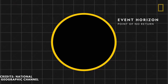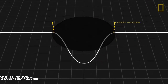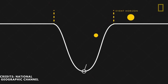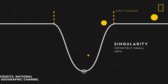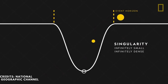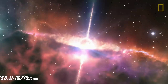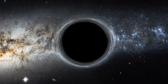Another important property of a black hole is its singularity, which is the point at the center where all the matter and energy of the black hole is concentrated. The singularity is a region of infinite density and curvature, where the laws of physics break down. No one knows what happens inside a singularity, or if it even exists.